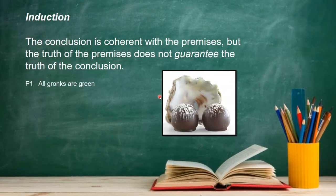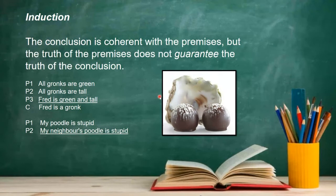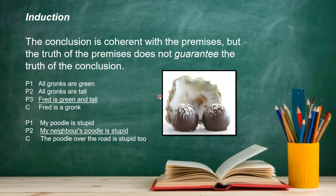Other examples: all gronks are green, all gronks are tall, Fred is both green and tall, so we can conclude that Fred is probably a gronk — but that doesn't necessarily guarantee the conclusion either. Or: my poodle is stupid, my neighbor's poodle is stupid, so odds are the poodle over the road is going to be stupid too. Probably true, but not guaranteed.